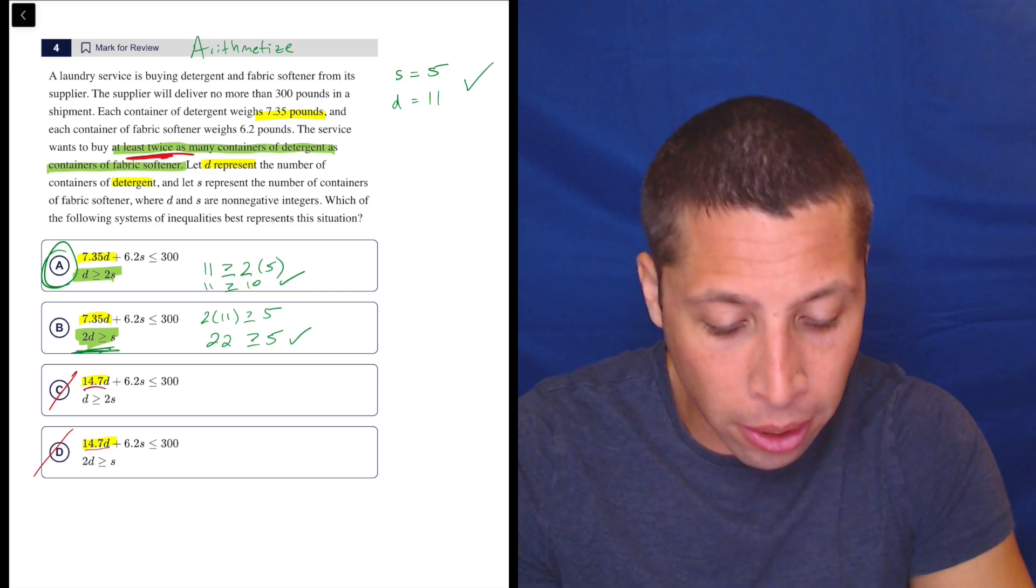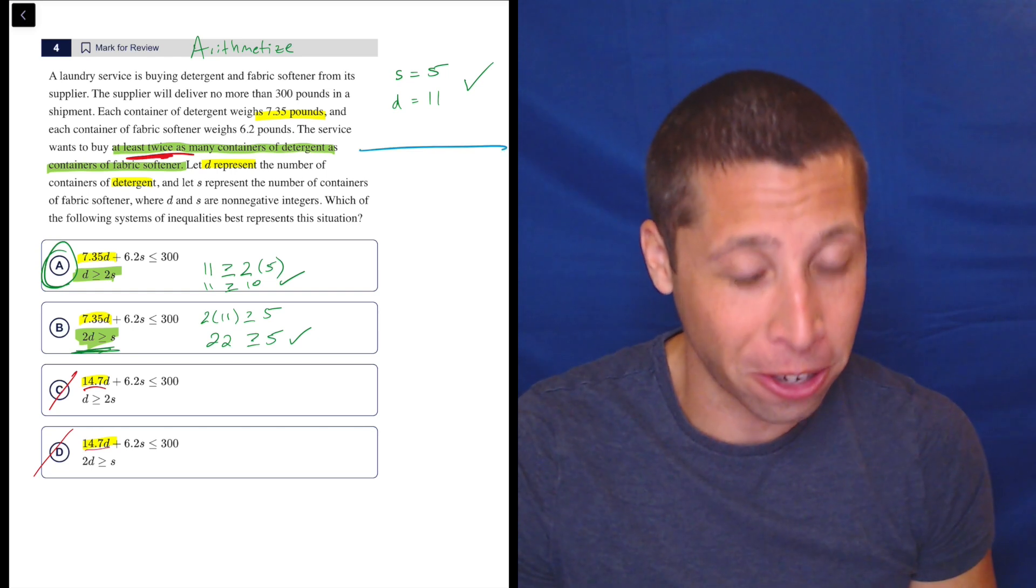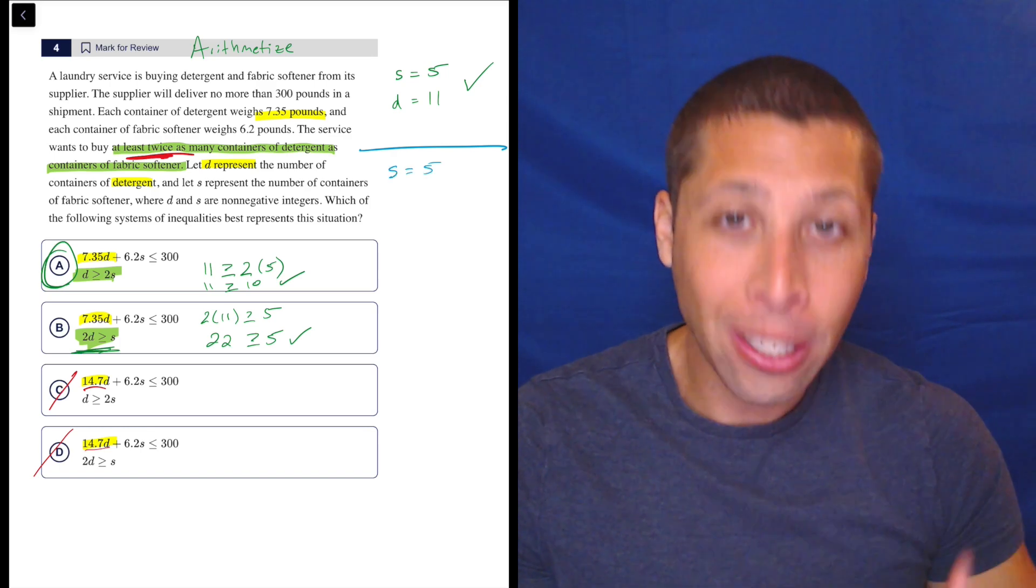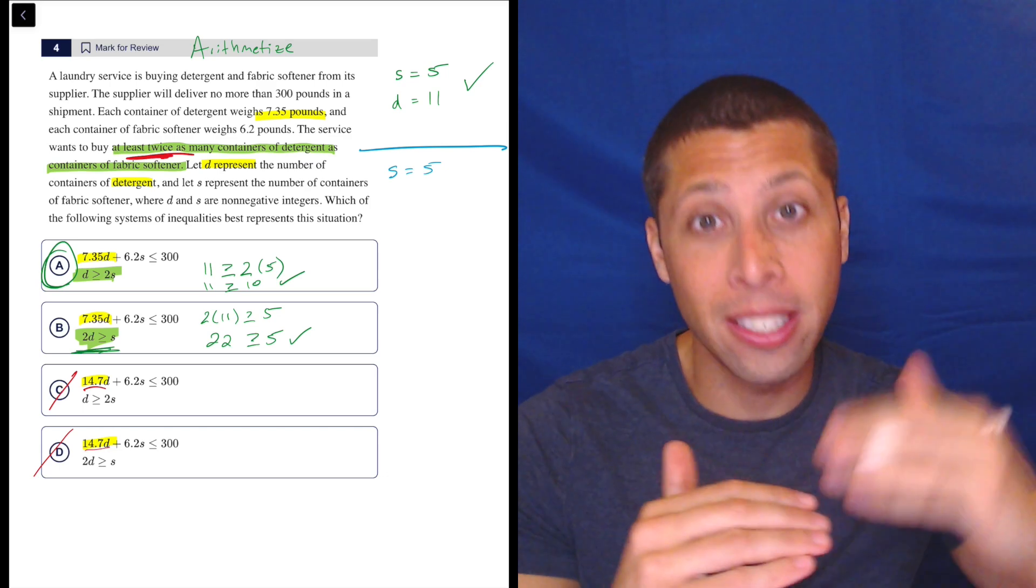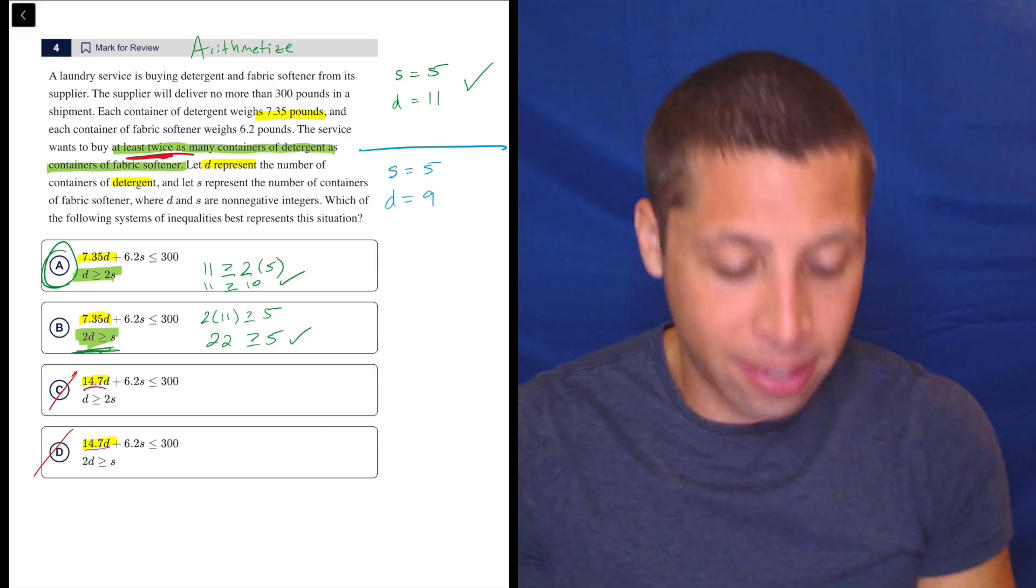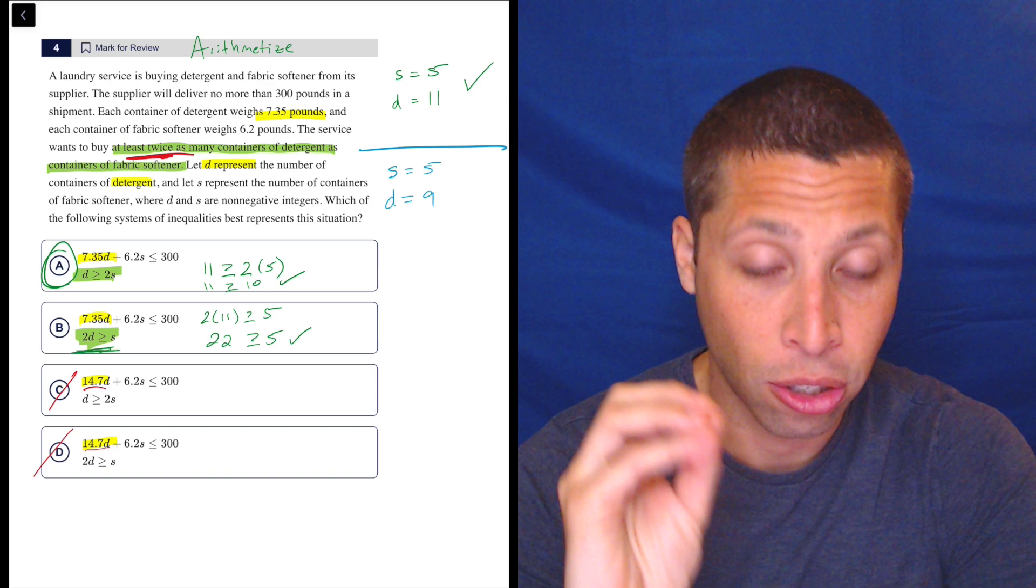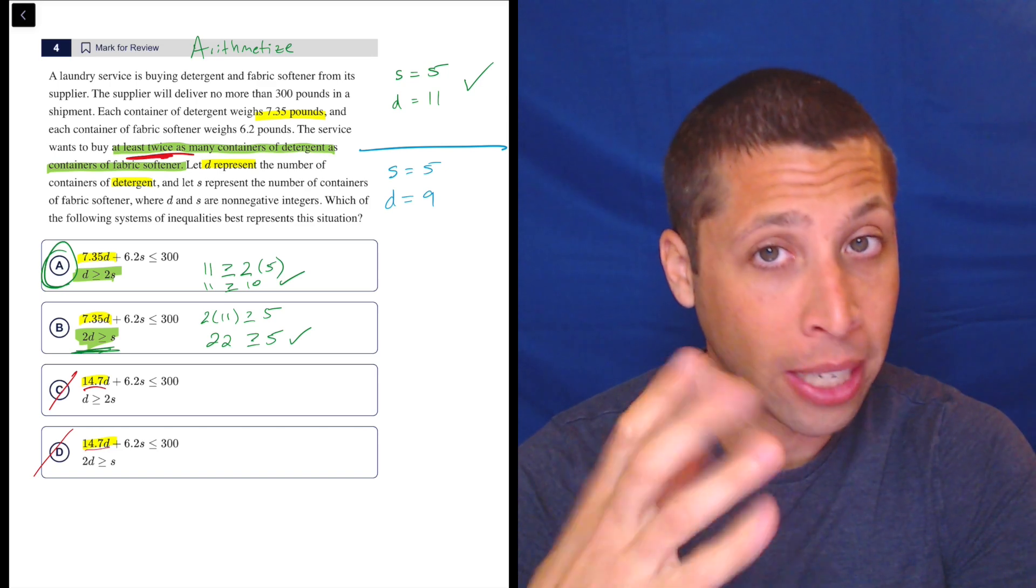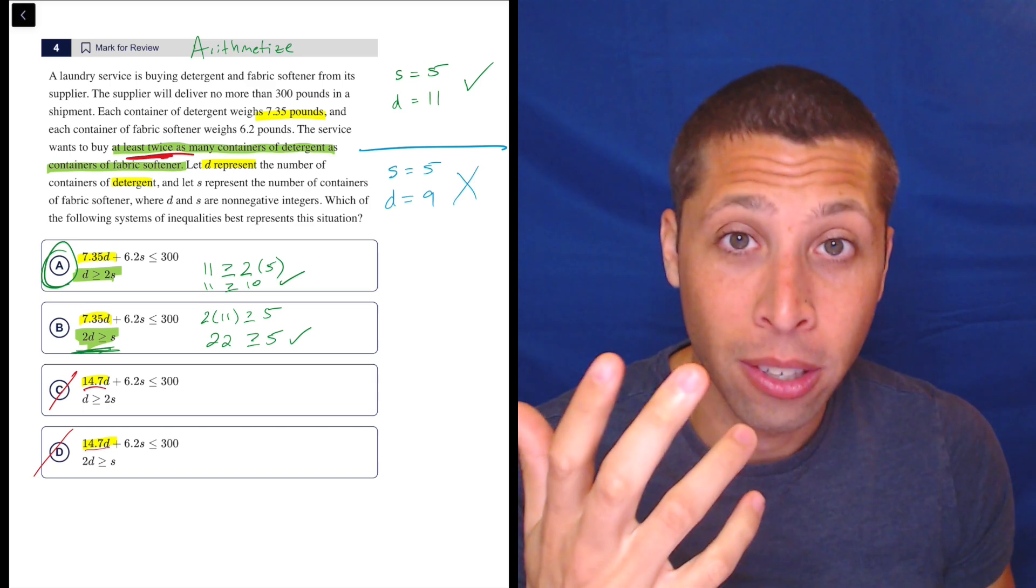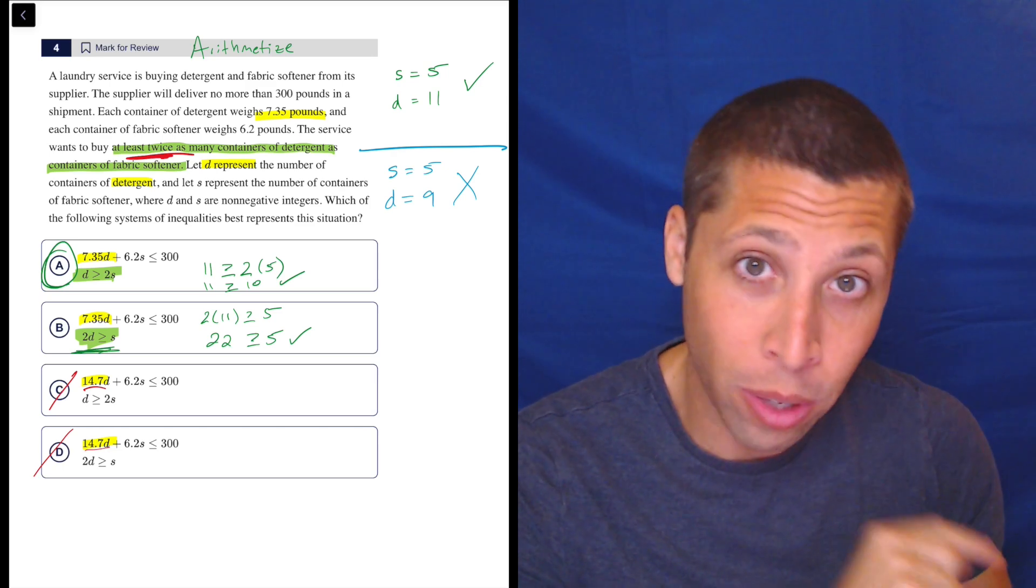But here's another thing we can do to really show why it's one and not the other. And this is weird, but I think this is a good skill to know. I use it occasionally on some hard inequalities questions. We tried the number 11 because we knew that satisfied the story. Let's try a number that doesn't. So with inequality, sometimes we want to kind of see numbers that work with the situation, but other times we want to see numbers that don't work. So what if we only had nine things of detergent? Let's review the story. What are they saying? They're saying that we need at least twice as many detergents as softeners. So if we doubled S, we'd get 10, but nine is not enough. That's not double the number of softeners. So this is a situation that fails. This is not okay according to the story, which means it also should not be okay according to the inequality.